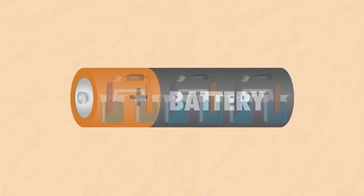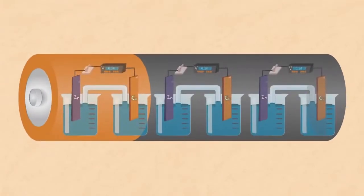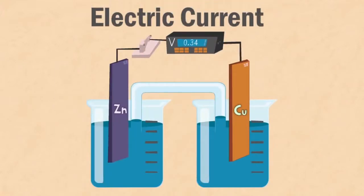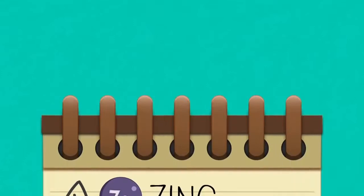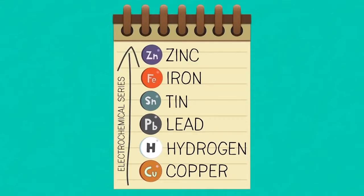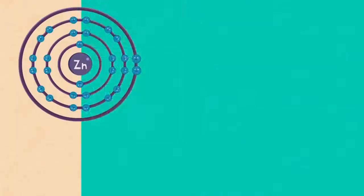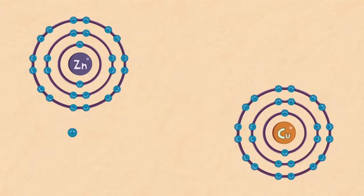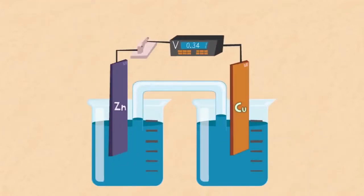The two metals connected in this way cause an electric current. This is because zinc is higher up in the electrochemical series than copper, which means that zinc can push away its electrons more strongly than copper can. As a result, electrons flow along the wire and through the voltmeter from the zinc to the copper.